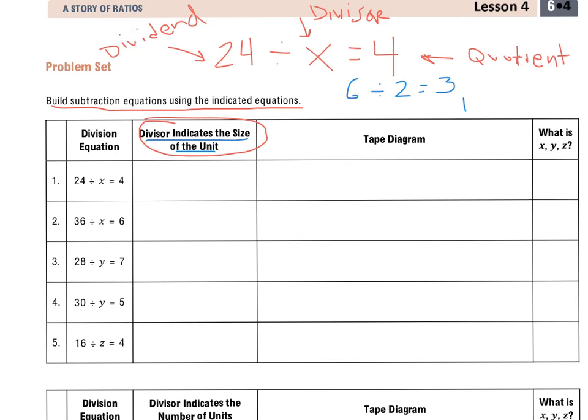if I did 6 divided by 2 equals 3, if this were indicating the size, the divisor is indicating the size of the unit, so that would mean that each unit has 2. So there's three groups of 2.